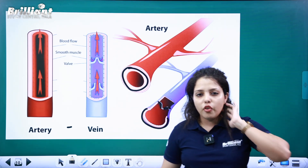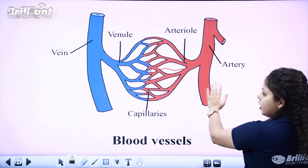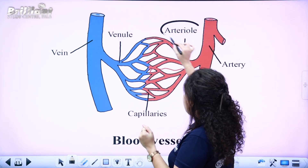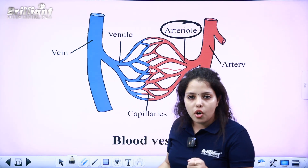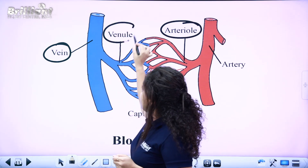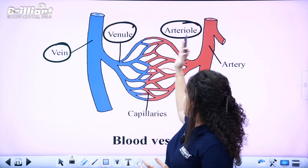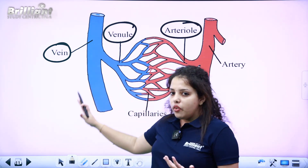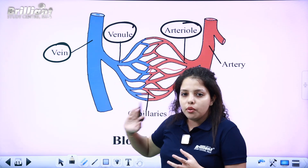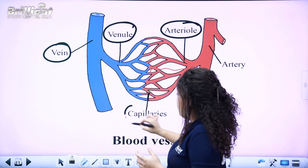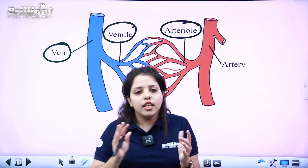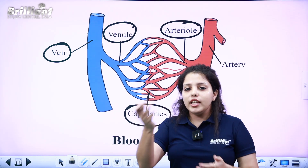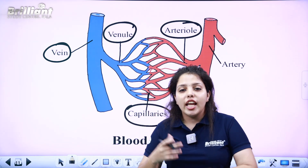Capillaries are formed when arteries and veins branch further into smaller vessels called arterioles and venules. Capillaries are the smallest and are much longer throughout the body.